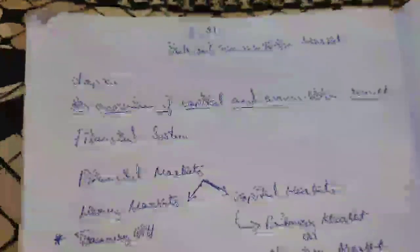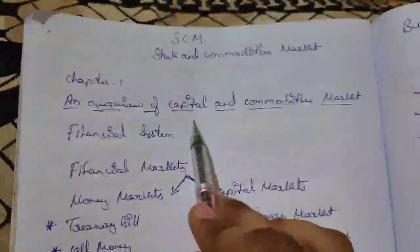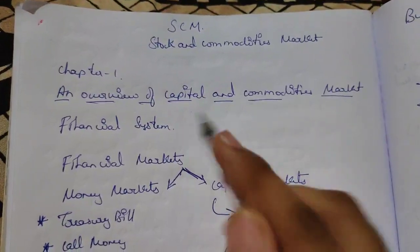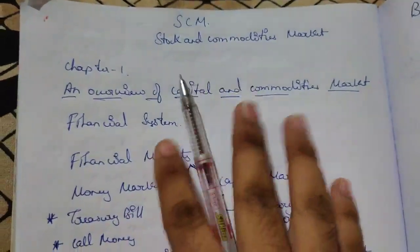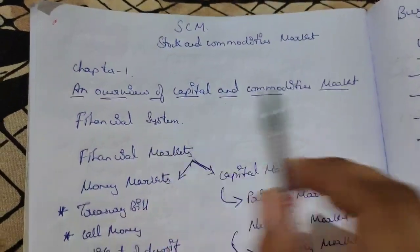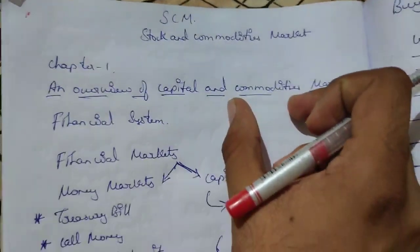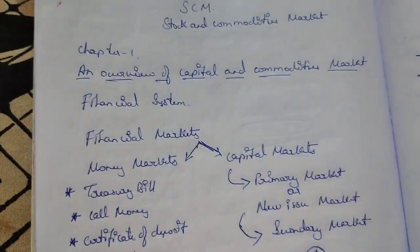Hi dear friends, welcome to Top Education. In this session we are doing Stock and Commodity Market. The first chapter name is an Overview of Capital and Commodity Markets. We are learning here about capital and commodity markets — first we'll learn about capital market, and next we'll go to commodity market.